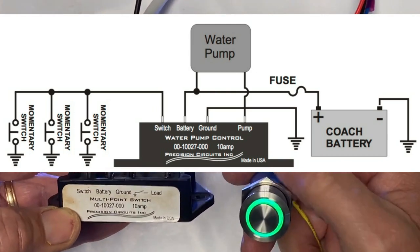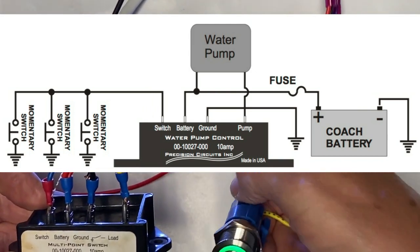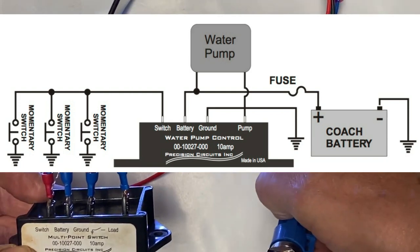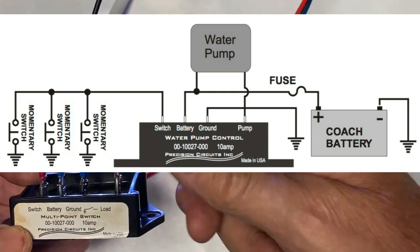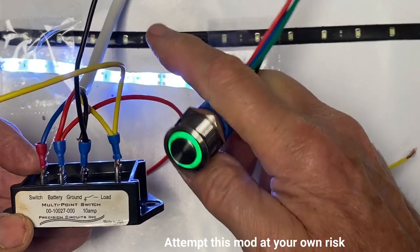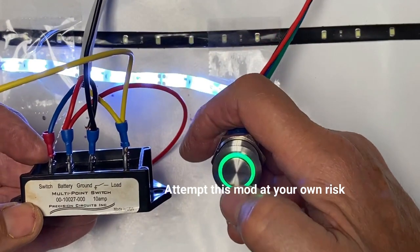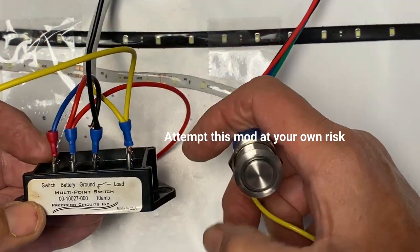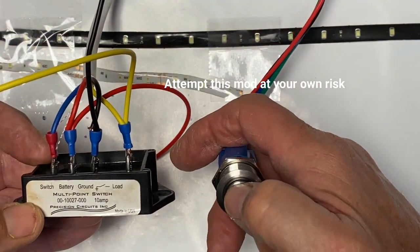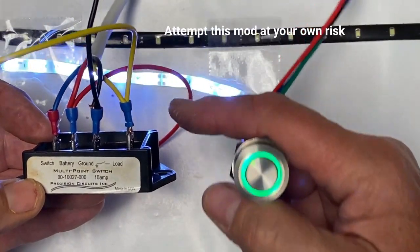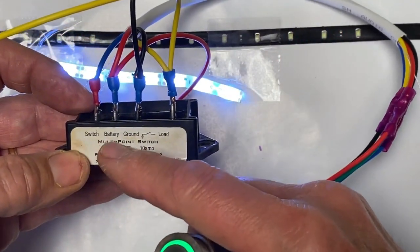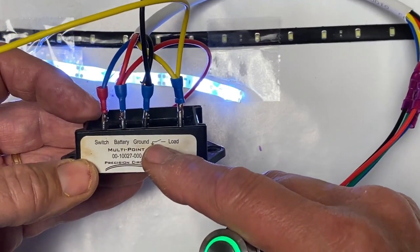In a previous video, I showed you how to wire an auxiliary water pump switch into the water pump control module. In this video, I'm going to show you how to install a timer so that the water pump will automatically shut off after a period of time that you select.